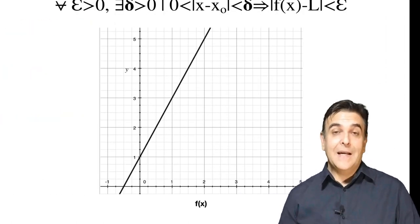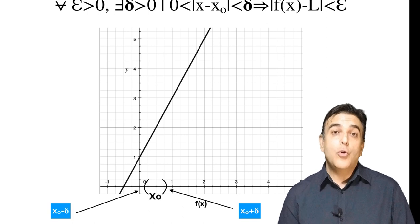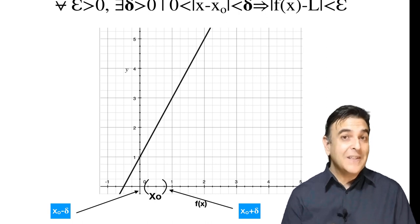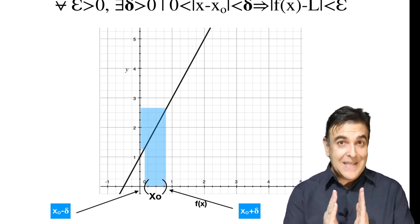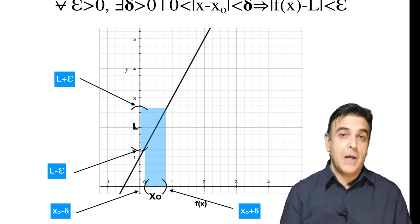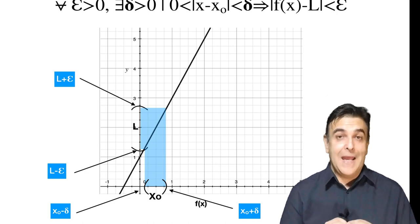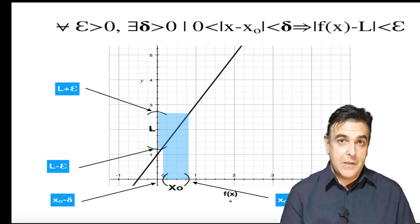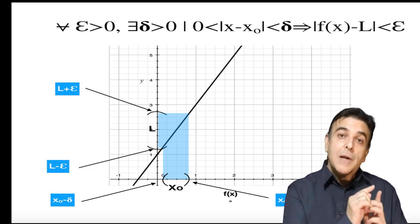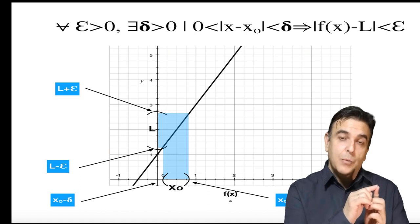Como podemos ver en esta gráfica, hemos creado un intervalo alrededor de x₀ cuyo radio es delta, donde sustituimos valores cercanos a x₀. Cuanto más cercanos sean los valores y más pequeño sea el intervalo, mejor. Y hemos visto qué zona de influencia tiene en la imagen: esa imagen estará influenciada por valores alrededor de L, cuyo radio lo determina epsilon. A medida que hagamos el intervalo más pequeño, nos acercamos a L. Nos acercamos a x₀ por la derecha y por la izquierda, y nos acercamos a L por la derecha y por la izquierda.